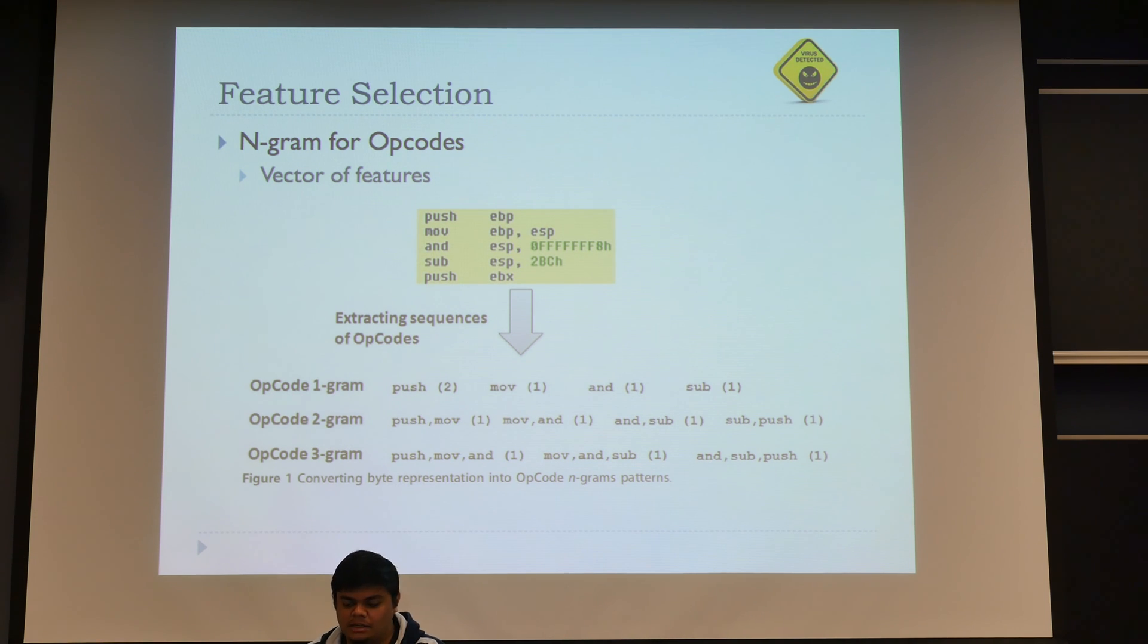The traditional technique in any text mining model is going for unigrams, which basically means you take in each word as a feature. As you can see, there are two push, one move, one and, one sub instruction. This gives us some good results. But if you think of it, malware is basically a piece of code—it's not just one line of code that's infecting your computer. This piece of code keeps repeating itself over the entire file, so it makes sense to take into account the order in which these instructions occur.